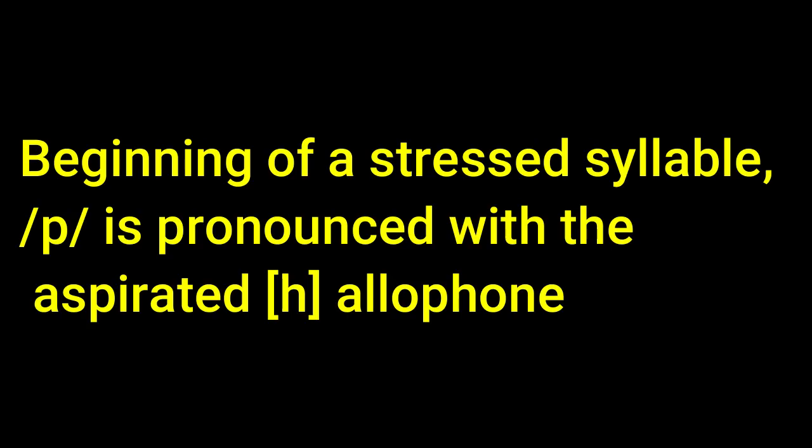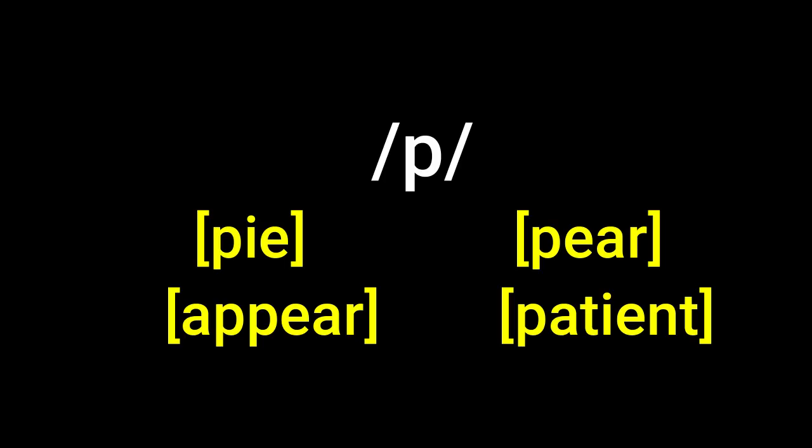The beginning of a stressed syllable is pronounced with the aspirated aliphone. Say for example: pie, pear, appear, patient.